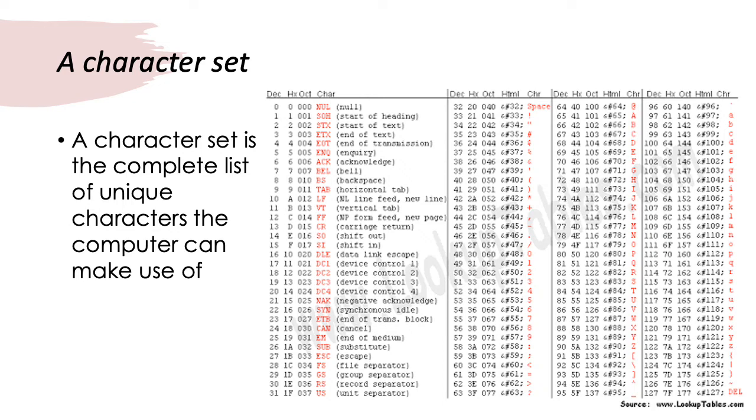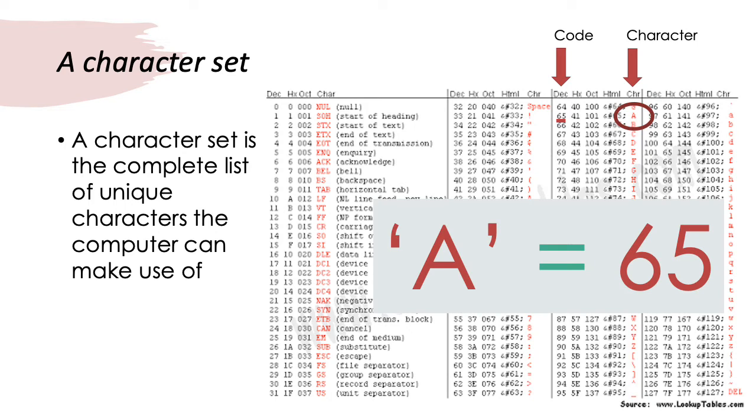Some of these characters we will recognize. Others we perhaps won't recognize yet. But let's take a look at this character here. This is the character for capital A. If we look along that row, we'll see that the character A, or capital A, has the code, the decimal value 65. So, we now know that capital A can be given the value 65.